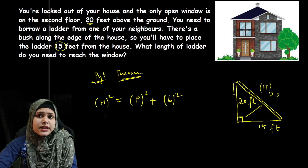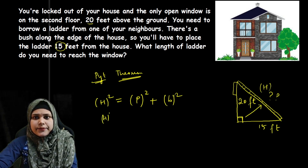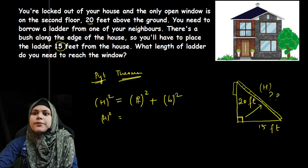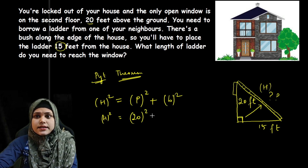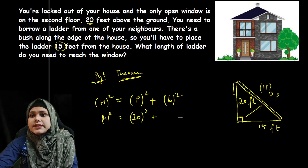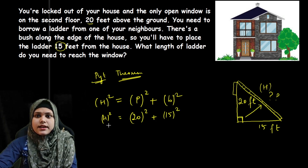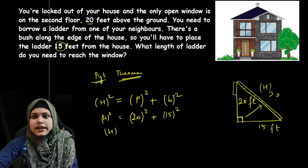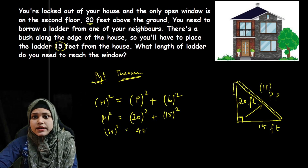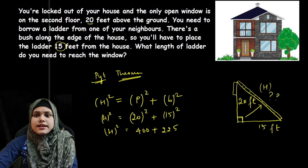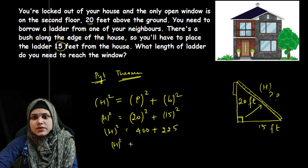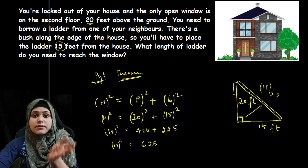We have not been given the hypotenuse, so we keep it as the unknown. The perpendicular is 20 feet, so that is 20 squared, which equals 400. The base is 15 feet, so that is 15 squared, which equals 225. Adding them together: hypotenuse squared equals 625.